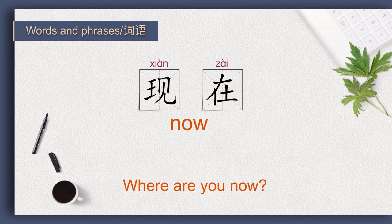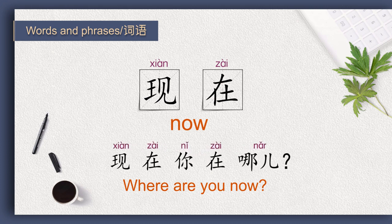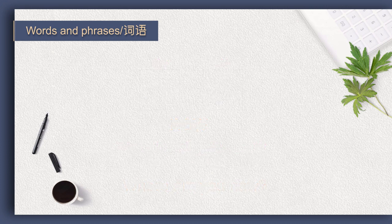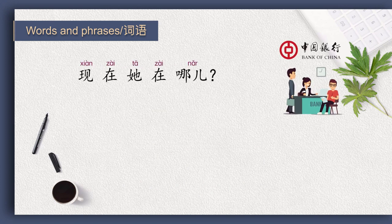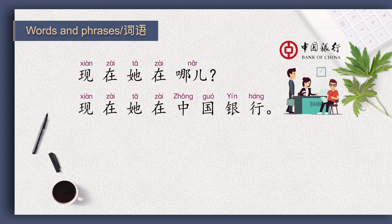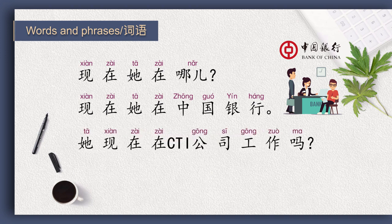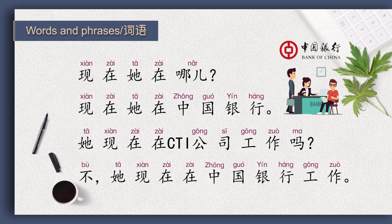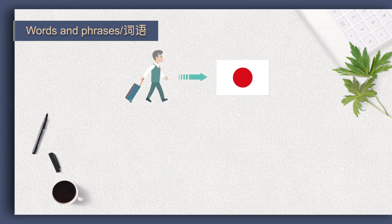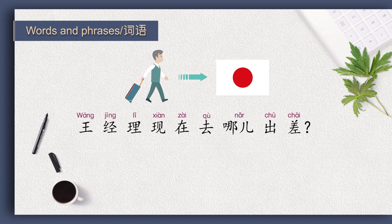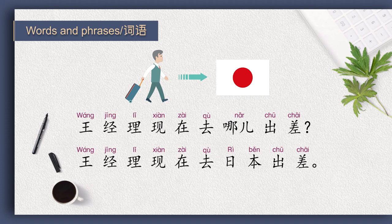So how do you say 'where are you now' in Chinese? 很好。 现在你在哪儿？ 现在他在哪儿？ 现在他在中国银行。 他现在在CTI公司工作吗？ 不，他现在在中国银行工作。 王经理现在去日本出差。